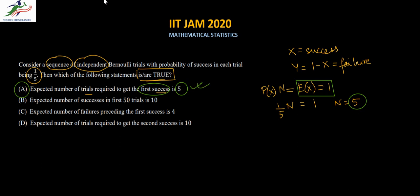Option B: expected number of successes in the first 50 trials. The expected number of successes is p × n = (1/5) × 50 = 10. So the expected number of successes in the first 50 trials is 10. Option B is also correct.